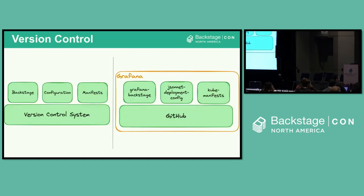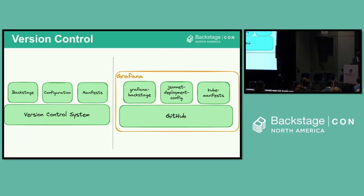First, we start with our repos and version control system. On the left we have the building blocks and on the right we have our implementation of each. You'll need a VCS to store and version your code, then we have three repos: the custom Backstage app, configuration code, and manifests. At Grafana Labs we use GitHub for repo management with three corresponding repos.